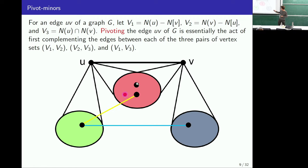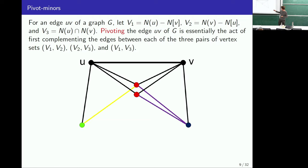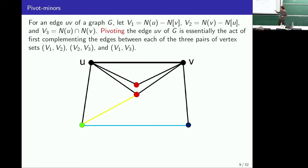The act of pivoting on edge UV is to complement the edges between these three sets. So say our neighbourhoods look like this and we had two edges to begin with — when we pivot on UV, we complement between each of these sets. We got rid of one edge, swapped another edge, and got two edges back. So pivoting UV takes us from one graph to another.